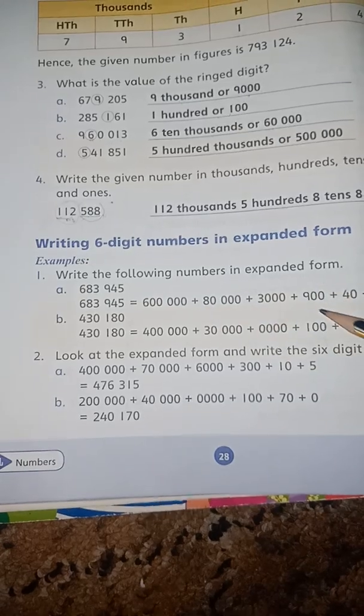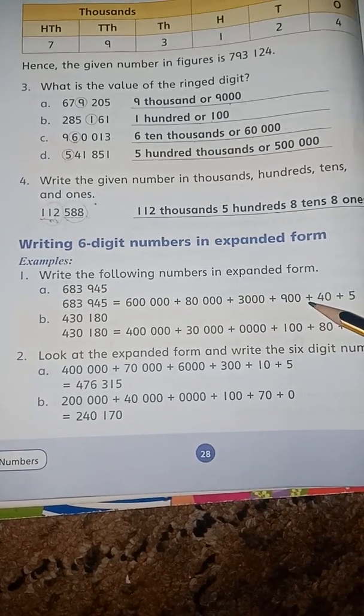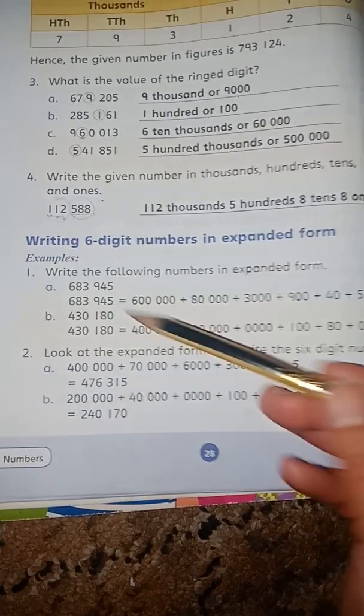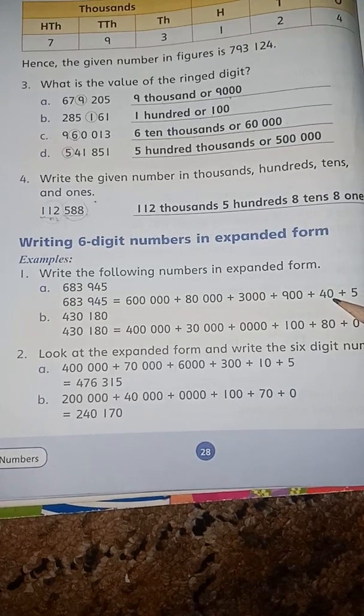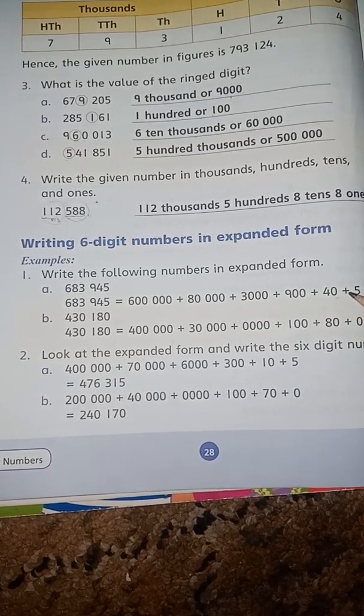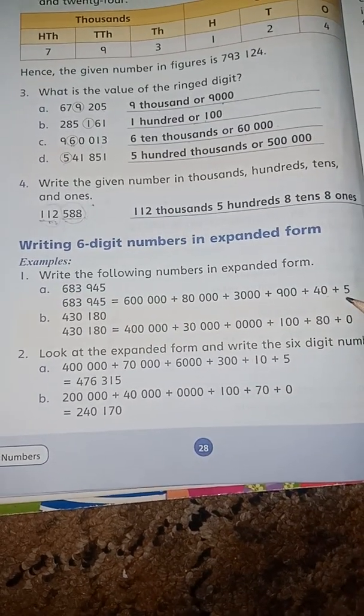Plus 9 with 2 zeros: 900, plus next digit 4 with 1 zero: 40, plus last digit 5. So the number is complete.